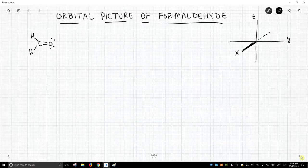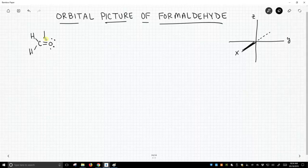So here is formaldehyde. Formaldehyde has a double bond between the carbon and oxygen, and that consists of a sigma and a pi bond, and the pi bond is going to dominate our picture.